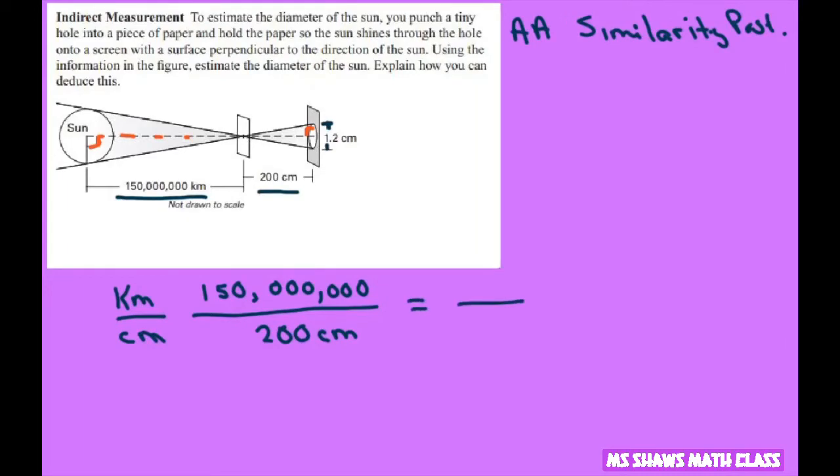And set up your proportion this way. I'd like to keep my X on top like that. Now you cross multiply. And before you do that we can actually take out two zeros.